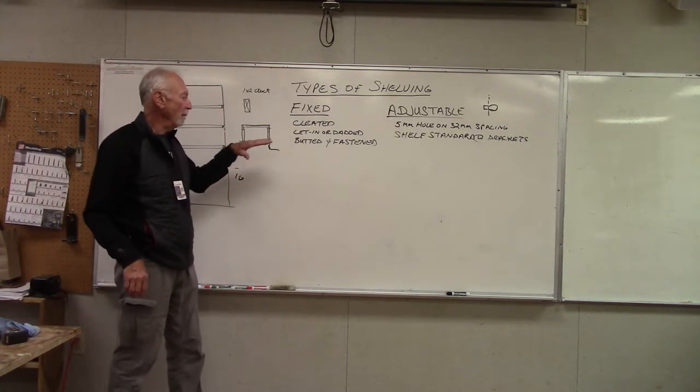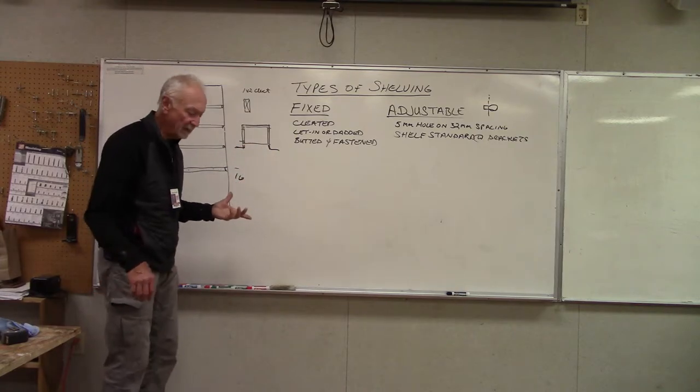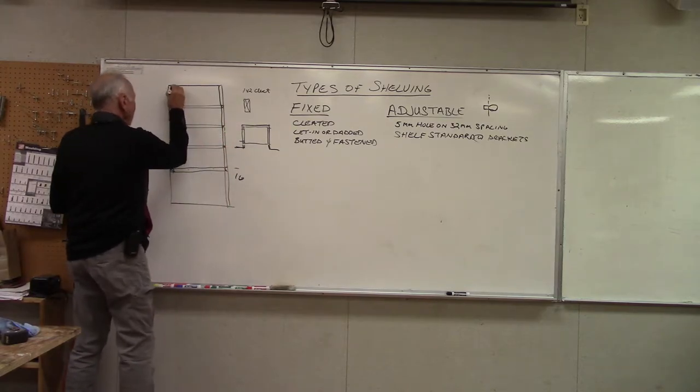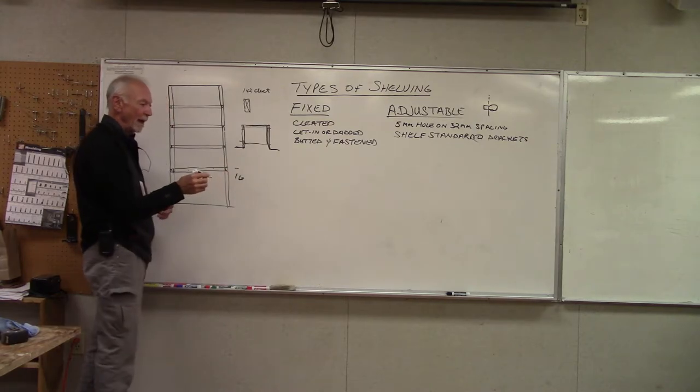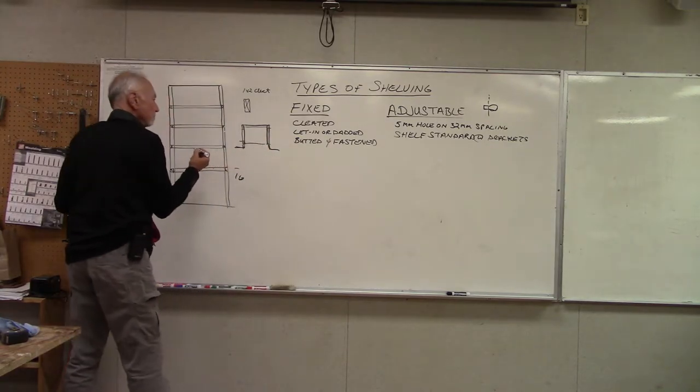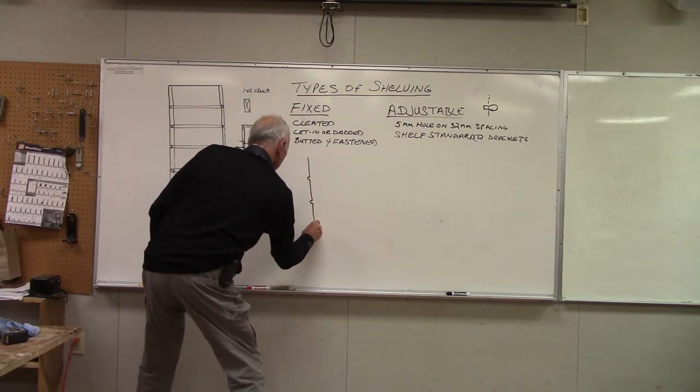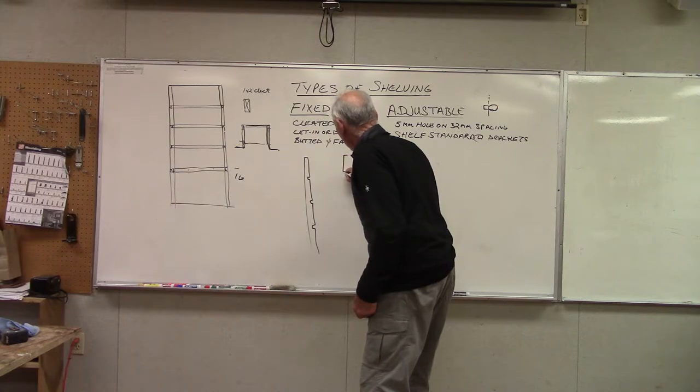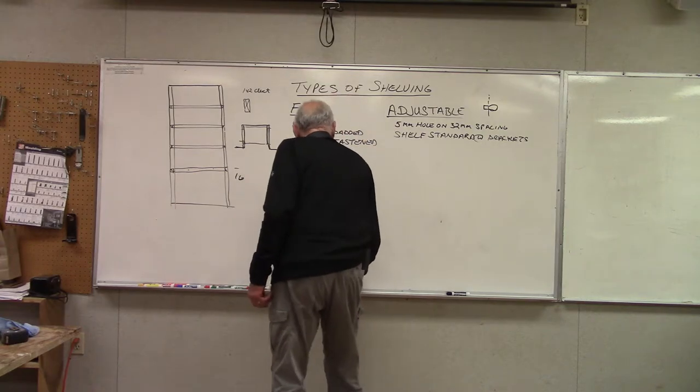Now lead-in or dadoed shelving, that would be way more appropriate for a cabinet but you certainly could do it in a condition like this. You would just basically make sides. You'd make a plywood side or MDF side for both sides of your wall, so this would be a whole side. You'd cut that whole side and you don't need anything for the back. Then on that side you could do lead-ins and just slide your shelving in.